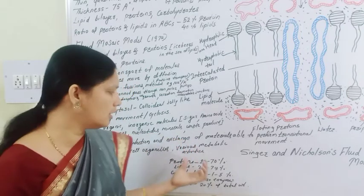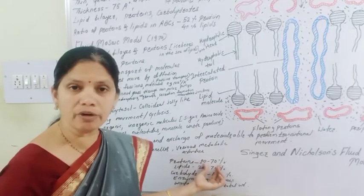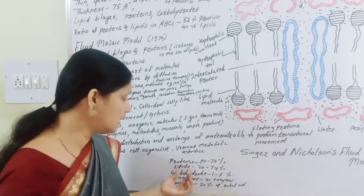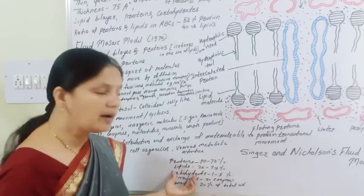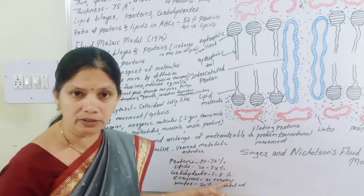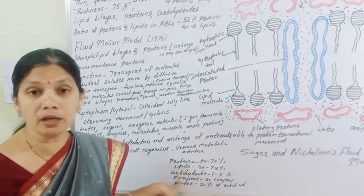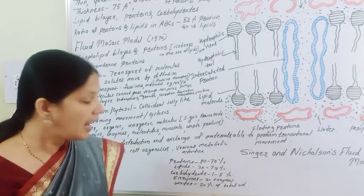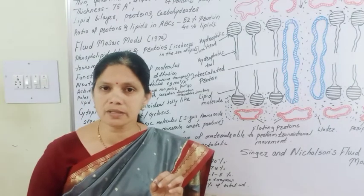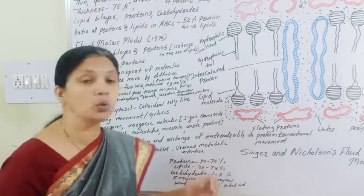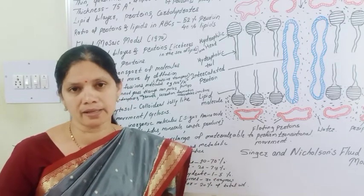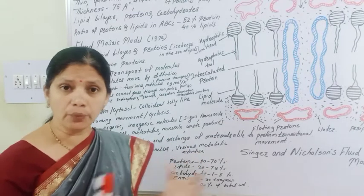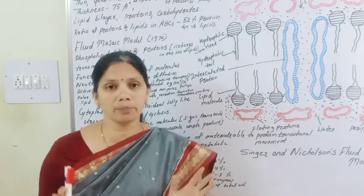The composition is 20-70% protein, 20-79% lipids, and 1-5% carbohydrates. There are approximately 30 different types of enzymes present in the cell membrane or plasma membrane. As well as 20% water is present by total weight. On average, this is the composition of the plasma membrane.